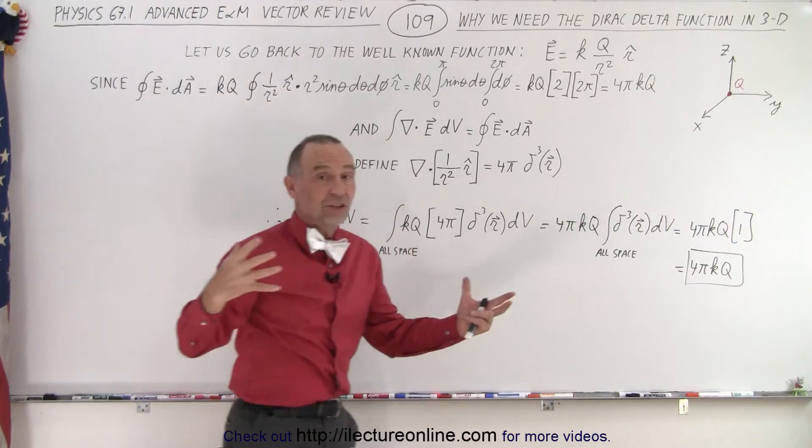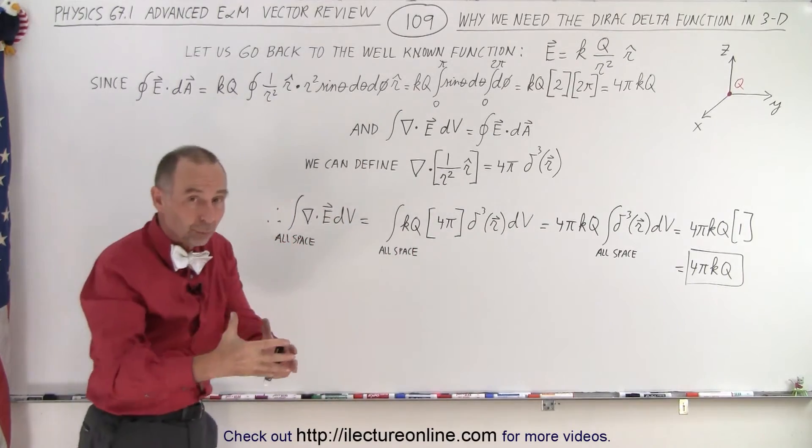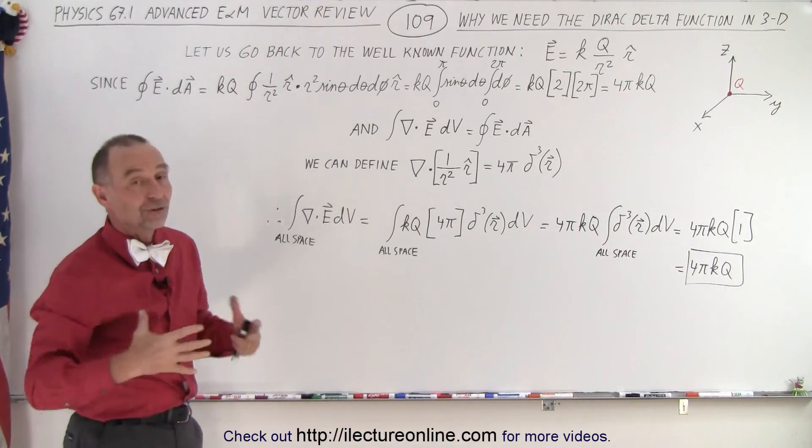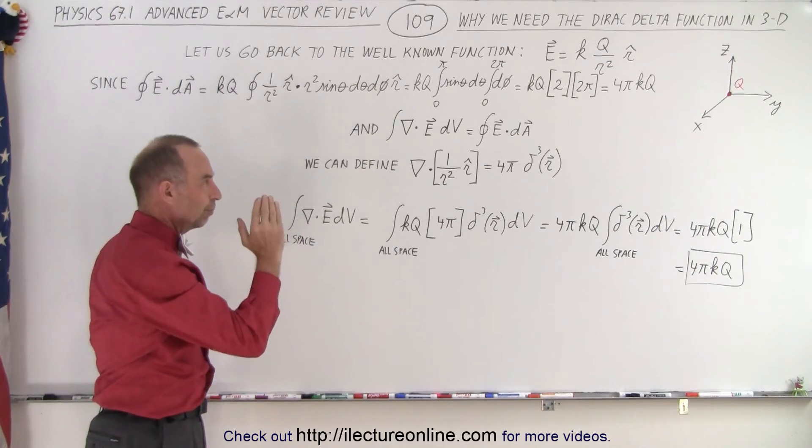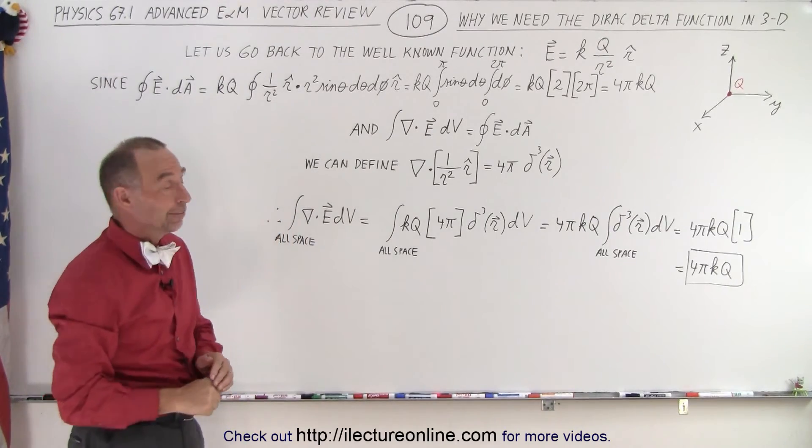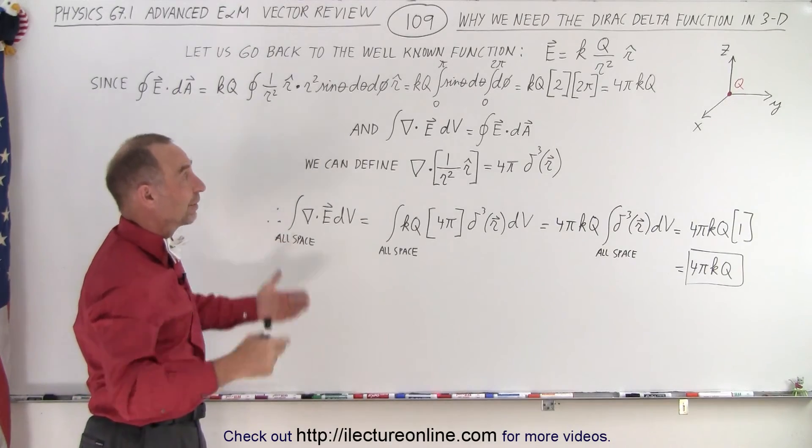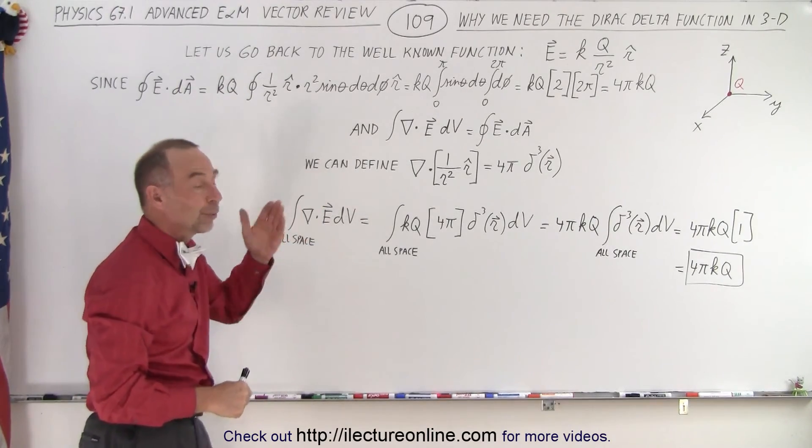We have infinite charge density at the origin where x, y, and z is equal to 0 and 0 everywhere else. The Dirac delta function is the perfect solution to a difficult problem like that. A problem you otherwise couldn't figure out how to solve, and now we have a good way to solve it.